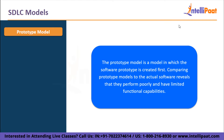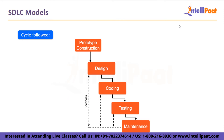Now we will talk about the prototype model. In this model, a software prototype is created first. Prototypes perform with limited functional capabilities compared to the actual software and are built with dummy functionalities — useful for figuring out what the customer actually wants. Software prototypes are created before the final product to obtain useful user feedback. After taking into account user feedback, the prototype is examined by the client again. This continues until the consumer accepts the model. After gathering requirements, a rapid design is made, a prototype is developed and delivered to the customer for review, and the prototype is modified in response to client comments.